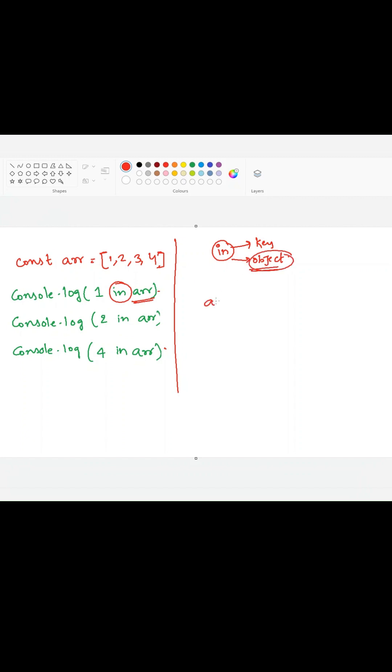Because arrays are considered as objects in JavaScript. So how you will access the value in an object? By using its key. How you will access the value in an array? By using its index. So index in array is similar to key in object. So in operator will check whether the index is present in the array indexes or not.